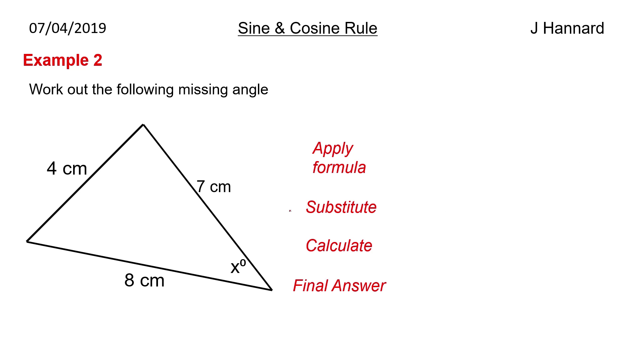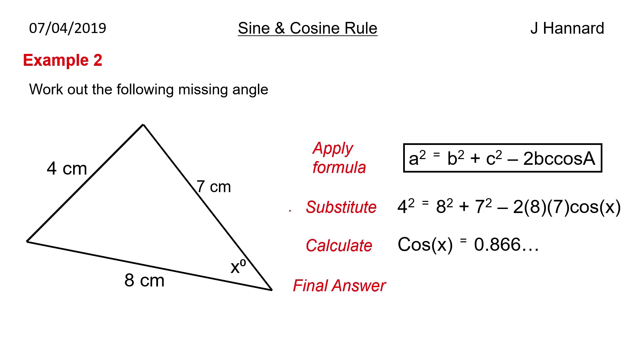Second one then, we want the angle and we are given all three sides, so again this is a cosine job. We start with that and then we stick in our numbers. So we've got 4 squared is equal to 8 squared plus 7 squared minus 2 times 8 times 7 times cos x. We then rearrange to get cos x equals 0.866, so the final answer is x equals 30 degrees.